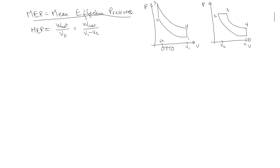We can treat MEP as just a calculable quantity, but what does it actually mean physically? Let's analyze the equation. The net work divided by the difference in volume — geometrically, the net work is the area enclosed by the cycle in the PV plane.